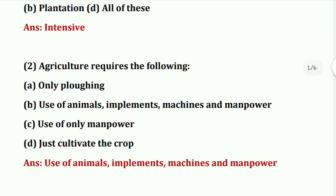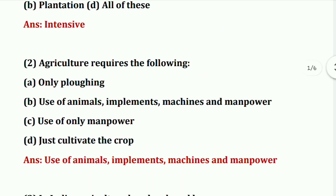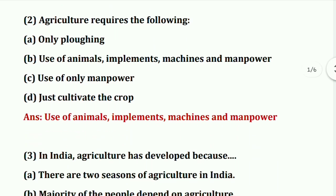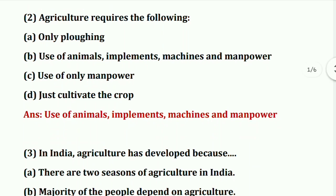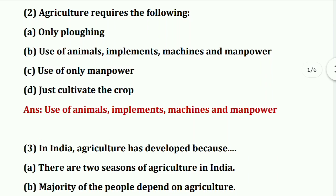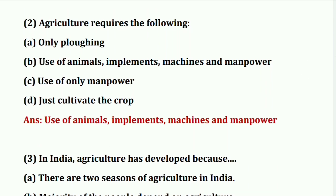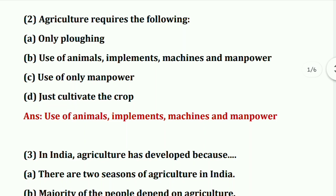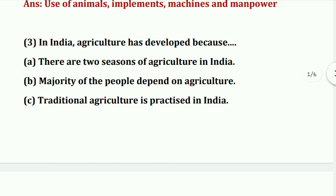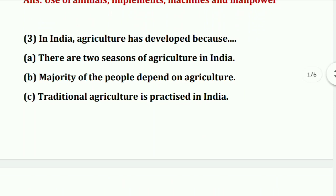Second question: intensive agriculture requires which of the following? The options are: use of only animals, use of animals implements machines and manpower, or use of only manpower. The answer is animals, implements, machines, and manpower.